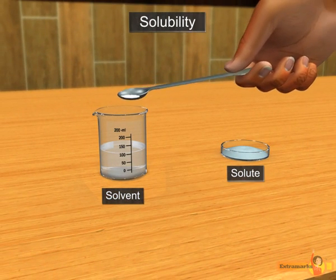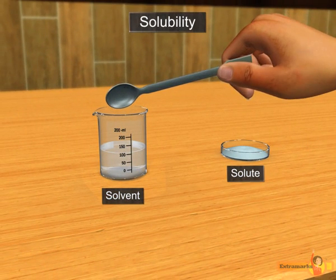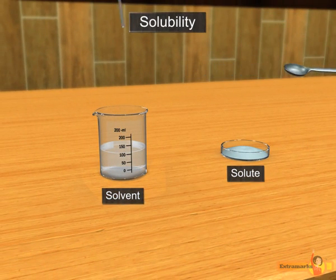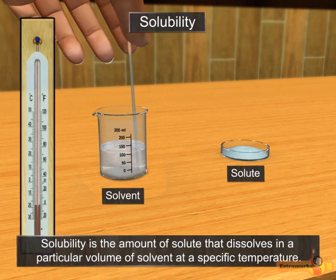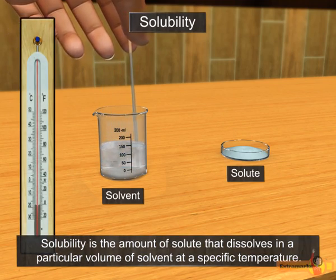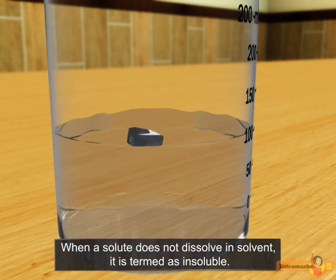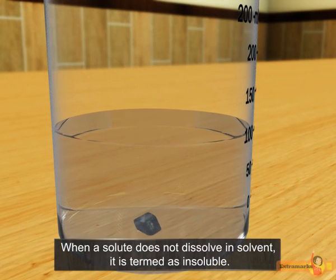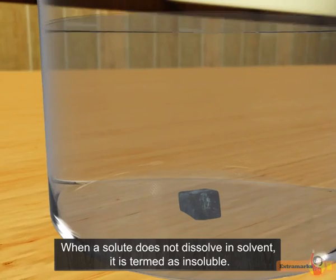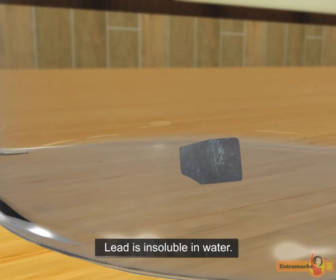Solubility of a substance is the amount of solute that dissolves in a particular volume of solvent at a particular temperature. If a solute does not dissolve in a solvent, it is termed insoluble. For example, lead is insoluble in water.